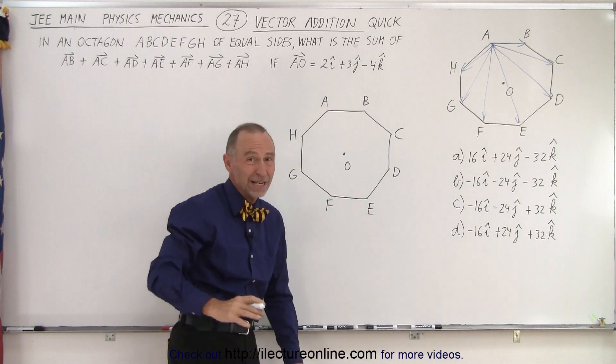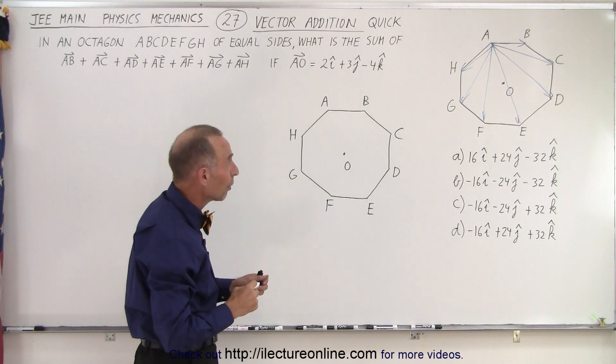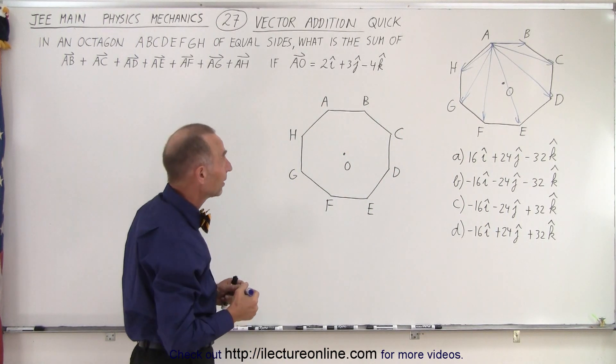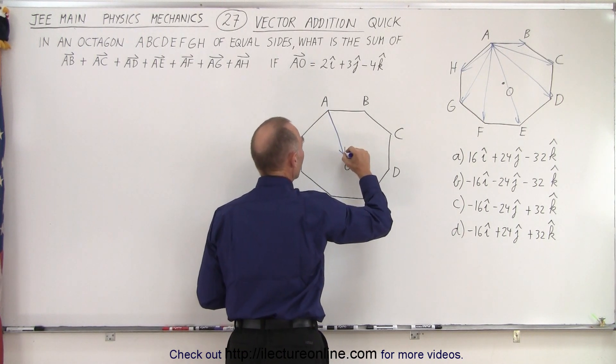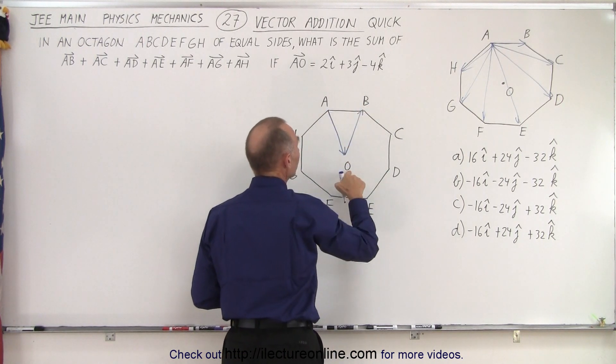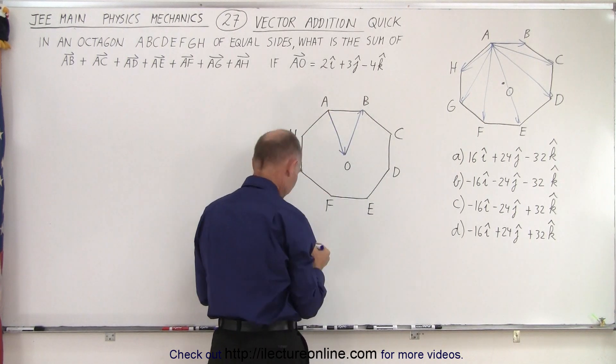And first when you look at that, you really have no idea how to go about that until you realize that A to B can be represented as going from A to O and then from O to B. The advantage is you know the vector A to O.